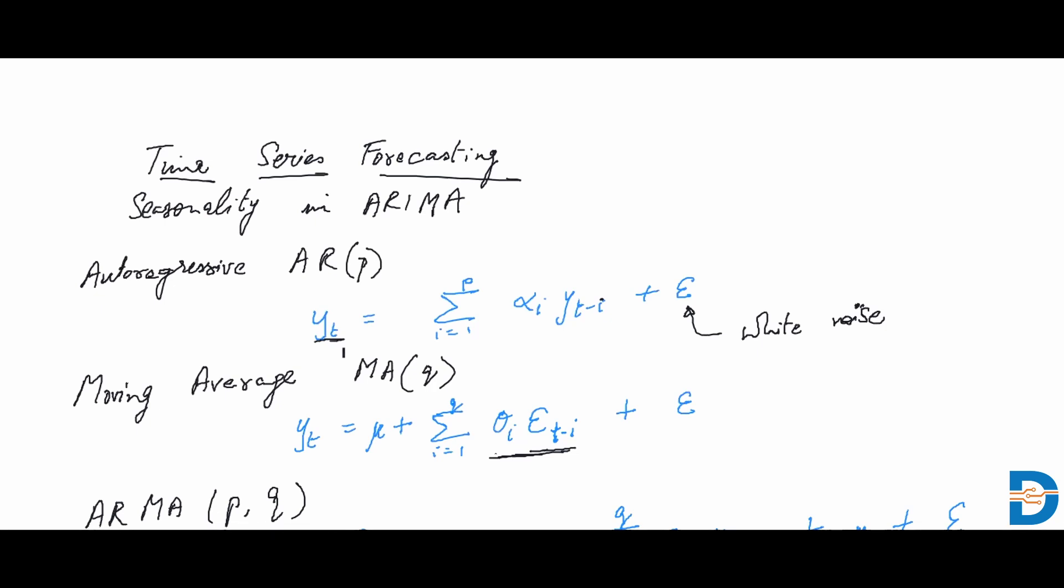We multiply this by theta. There is now again a multiplier in place, so likewise if we have q terms, then we are summing up all these terms. This is added to the mean of all the observations, mean of all the past observations, and once again we have a term that denotes the white noise.